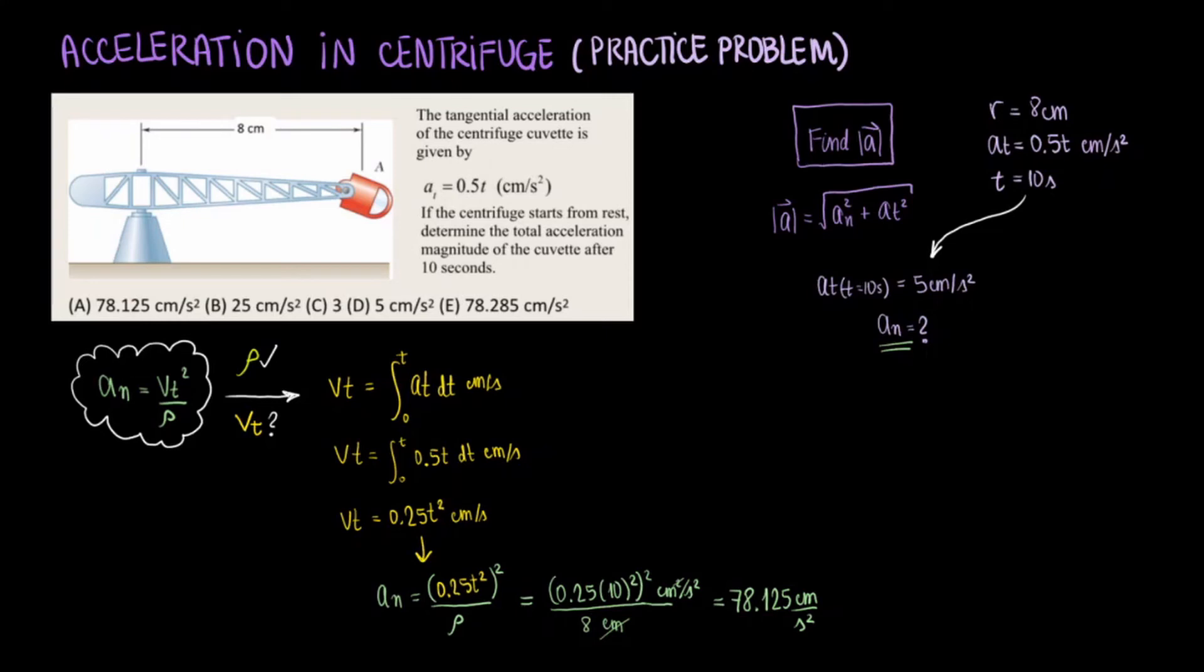We are not done though. They asked for the linear acceleration magnitude. So we return to that equation from the beginning and substitute in what we know about the normal and tangential acceleration components. Square the components, add them, take the square root, and our final answer ends up being 78.285 centimeter per second squared as the magnitude of the linear acceleration.